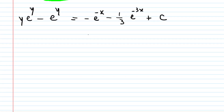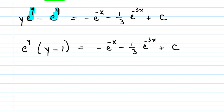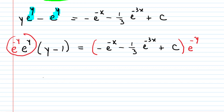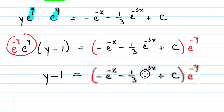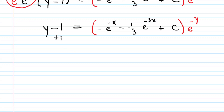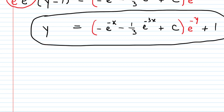Some teachers might allow you to leave it in this form, but if we want to solve for y, we go to the left side and notice there is a common factor of e to the y. We factor it out, leaving y minus 1 on the left side. To isolate y, we multiply both sides by e to the negative y. On the left side, e to the negative y times e to the positive y is e to the 0, which is 1, so those cancel out. Finally, to solve for y we add 1 to both sides, which cancels the minus 1 on the left side. And there is the solution to the differential equation solved for y — this is the final answer.